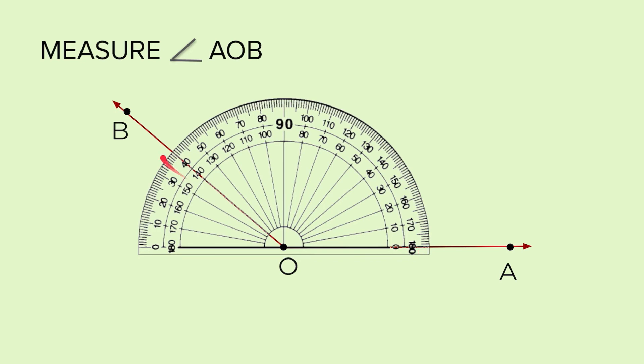Make sure the base ray aligns with the line on the protractor. Now, here we have two readings, 40 and 140. Now, look at the base ray of your angle. The 0 is in the inner circle. So we will take the inner circle reading. Inner circle reading is 140. So the measure of angle AOB is equal to 140 degrees.